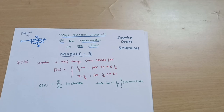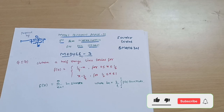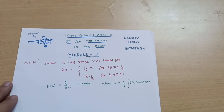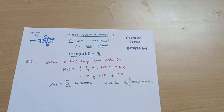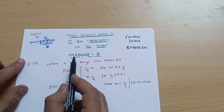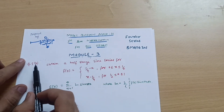Hello everyone and welcome back to my channel. We are discussing the module question paper for the mathematics subject for the EE stream students. So far we have discussed various problems — if you have not watched yet, you can go to the description box where I have provided the link. Today I am with another question from Module 3, Question 5(b).